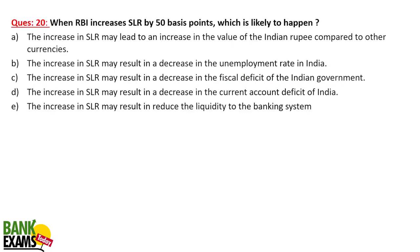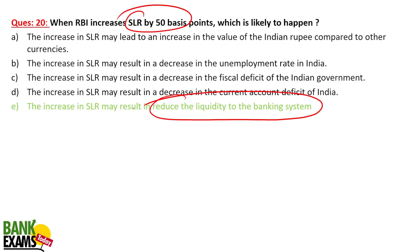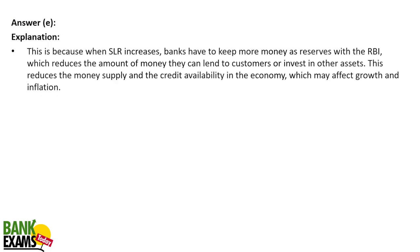Question ten: when RBI increases the SLR (statutory liquidity ratio) by 50 basis points, what is likely to happen? If banks are required to maintain more assets as SLR, they cannot lend that money in the market, which means there is less liquidity in the market. People borrow less money and the supply of credit is lower in the market.